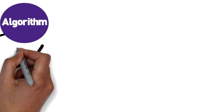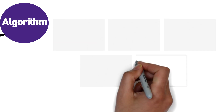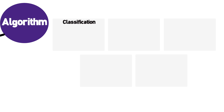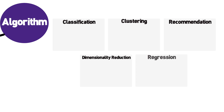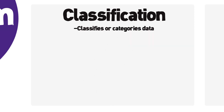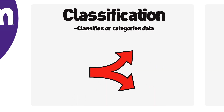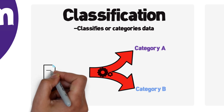Just like there are different learning methods for different use cases, so too are there different algorithms based on the need. We're going to review five of the most common algorithms here, which include classification, regression, recommendation, dimensionality reduction, and clustering. Let's start off with the classification algorithm, which, as its name indicates, is focused on classifying or categorizing data. In a cybersecurity context, this type of algorithm is one of the most common because the machine is classifying what is good or bad, clean or malicious.